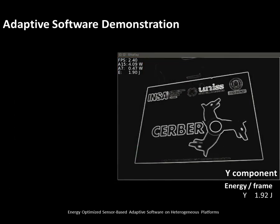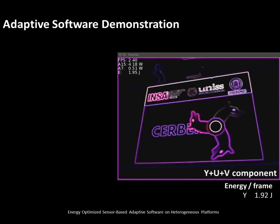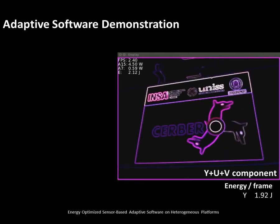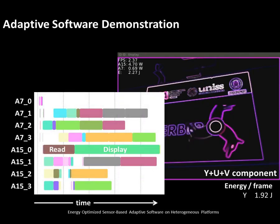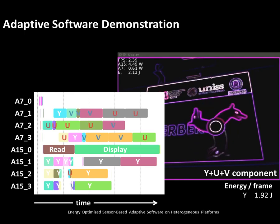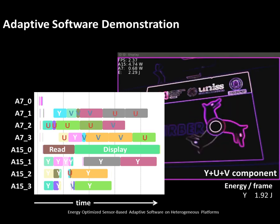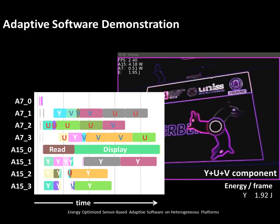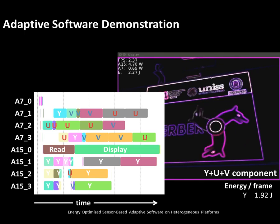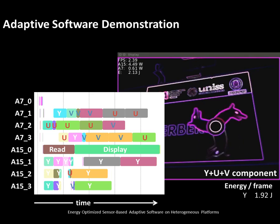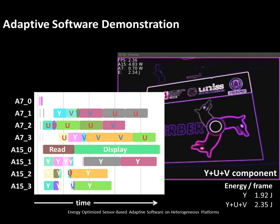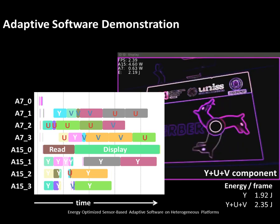When new colors appear in the frames captured by the camera, processing of both the U and V components is enabled. As shown in the corresponding Gantt diagram, the additional computation needed to process the two chrominance components — each having a resolution 4 times smaller than the luminance component Y — are mapped on the A7 cores. Although these cores are slower, using them is a smart decision since all A15 cores are already used by the read and display actors and for processing the luminance component. In this configuration, the average energy consumption increases to 2.35 joules per frame due to the additional processing on the A7 cores.